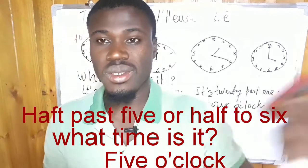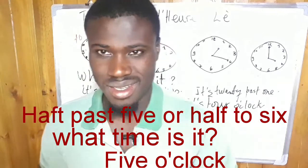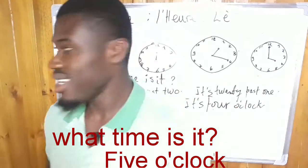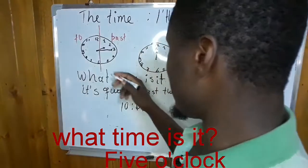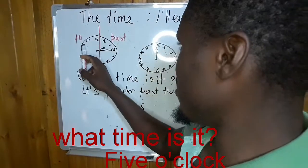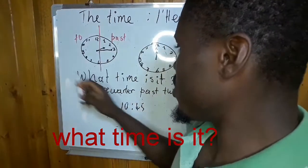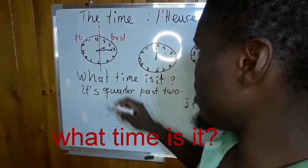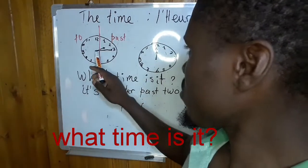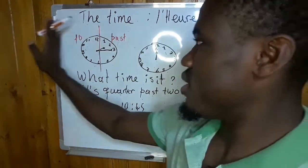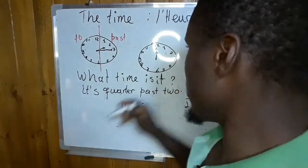You can also say 'half to 6'. Now when we have the clock approaching the next hour, like 2 minutes to the next hour — we don't say it the other way, we say 'to'. So it's 2 to the next hour — it's not 'past', it's 'to'.